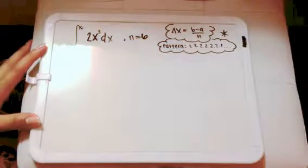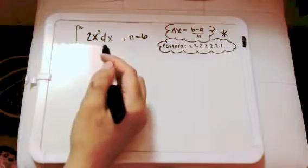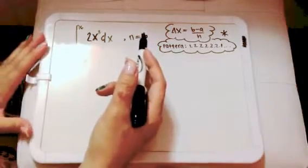So the problem asks us to use the trapezoidal rule to approximate this function when n equals 6 and compare it to the result of the exact value.